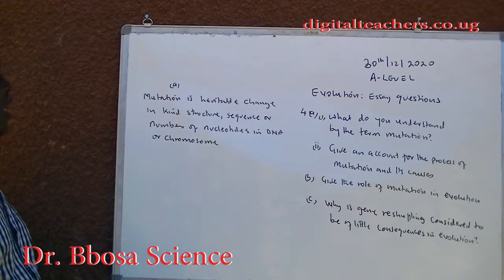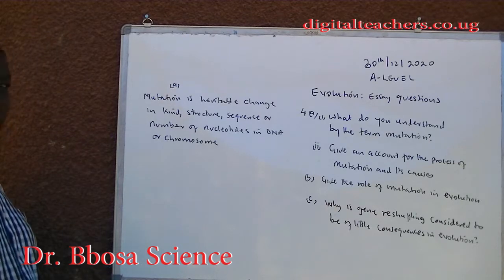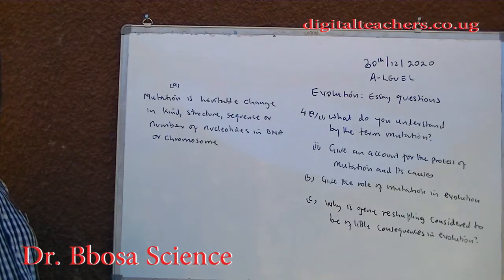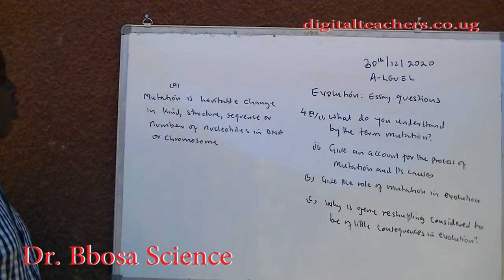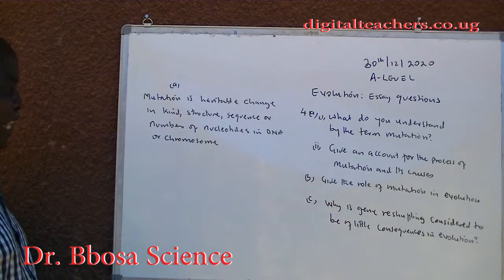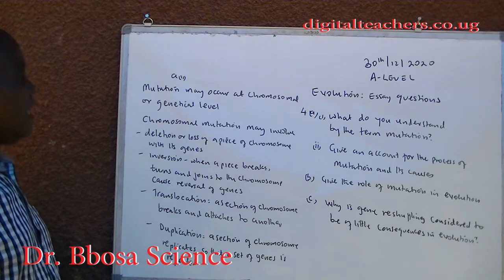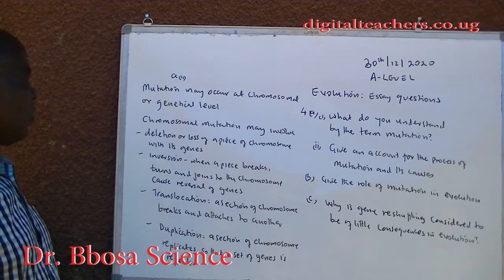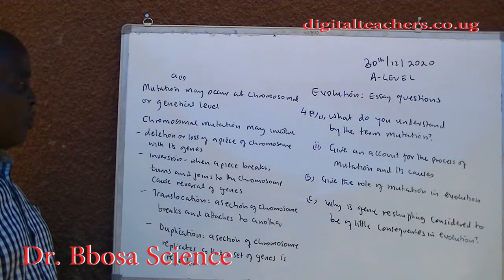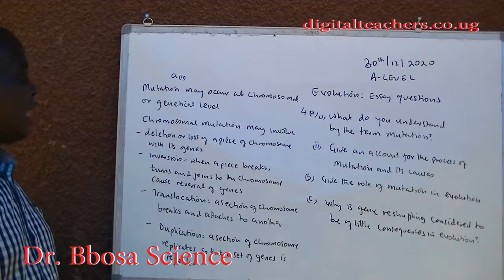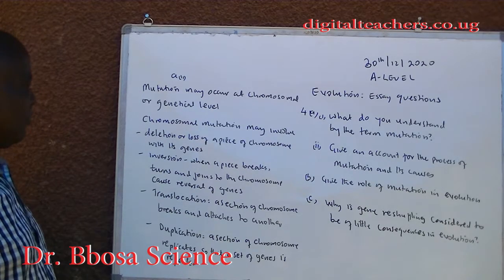A. Mutation is a heritable change in the kind, structure, sequence, or number of nucleotides in DNA or chromosomes. Mutation may occur at the chromosome and genetic level.